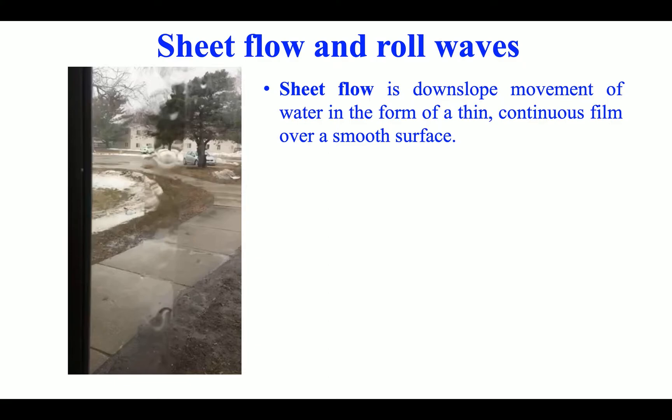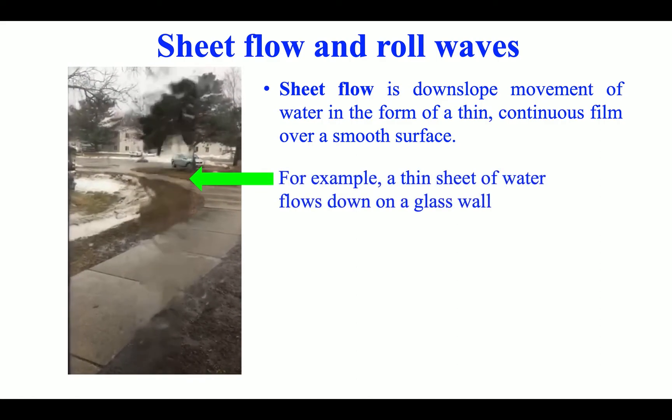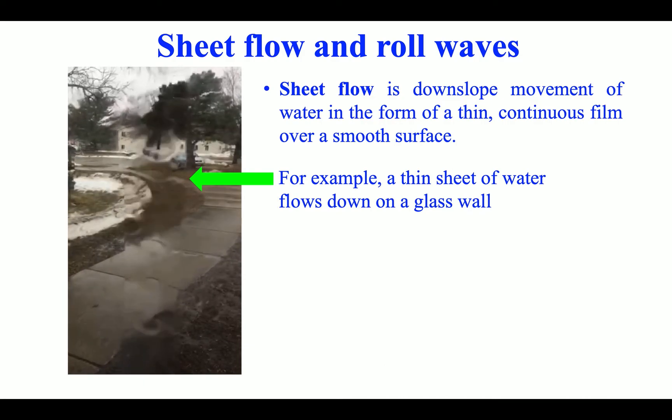Sheet flow is downslope movement of water in the form of a thin, continuous film over a smooth surface. For example, a thin sheet of water flows down on a glass wall.